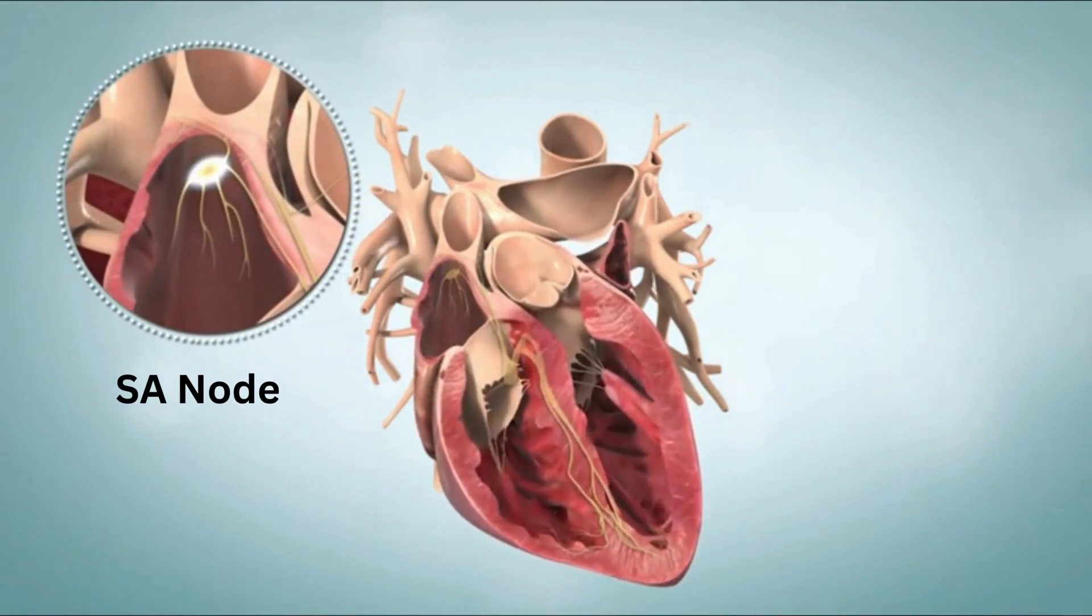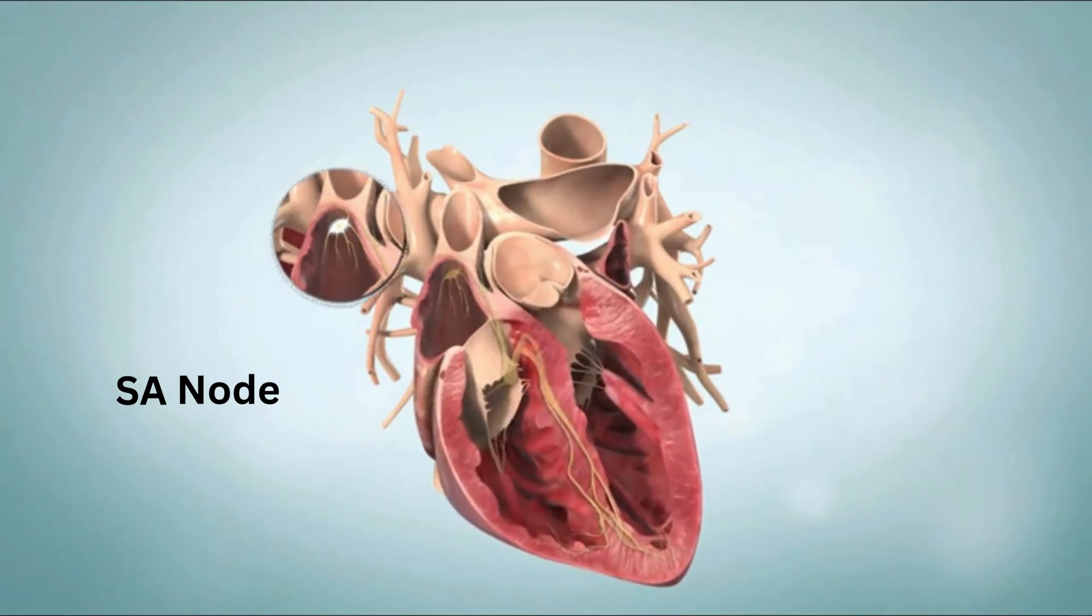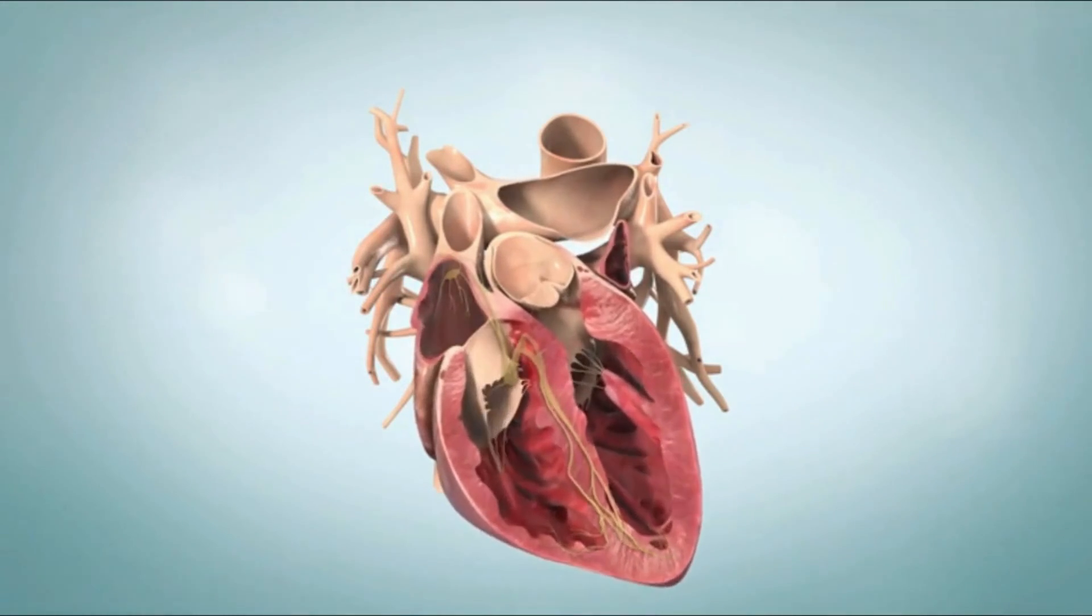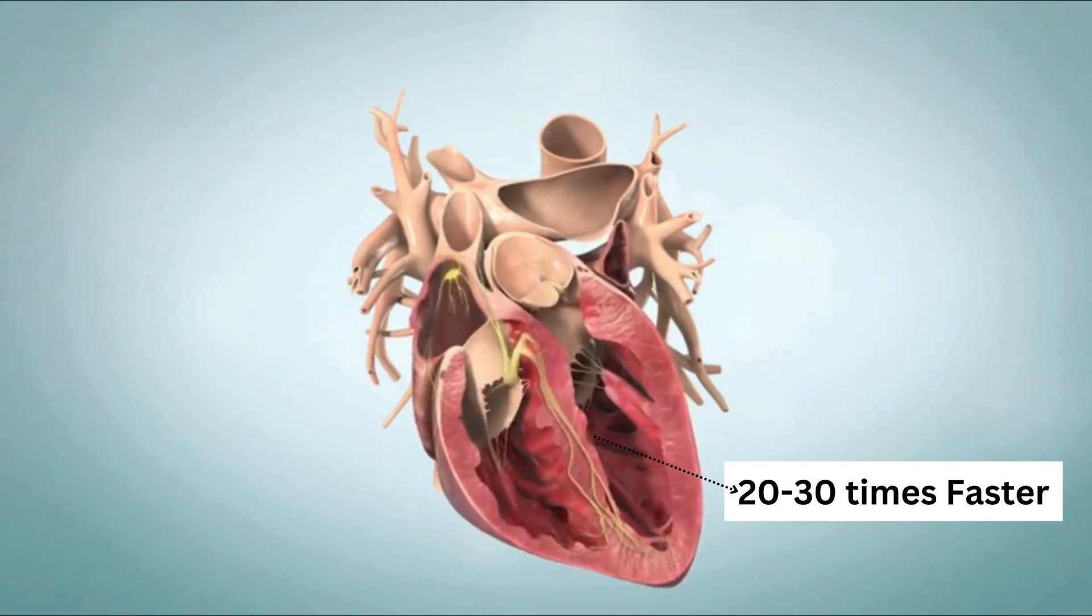For instance, the sinoatrial node, often referred to as the heart's natural pacemaker, initiates the electrical impulse at a relatively slow speed compared to other parts of the conduction system. But when it comes to the ventricles, things speed up significantly, almost 20 to 30 times faster than in the atria.